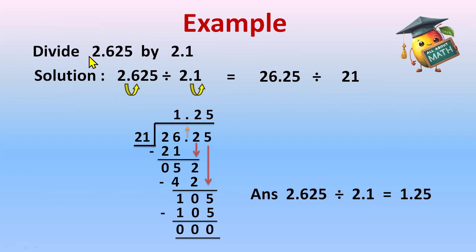So the answer for 2.625 divided by 2.1 is 1.25, which is our quotient, is our answer.